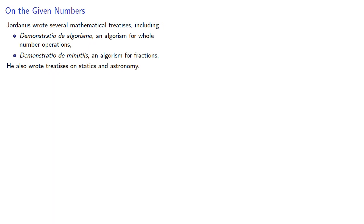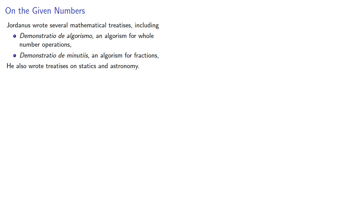Jordanus wrote several mathematical treatises, including Demonstratio de Algorismo, an algorithm for whole-number operations, and Demonstratio de Meneutis, an algorithm for fractions. He also wrote treatises on statics, which is very important when you're constructing a large building that you'd rather not collapse right away, like a Gothic cathedral, and astronomy.